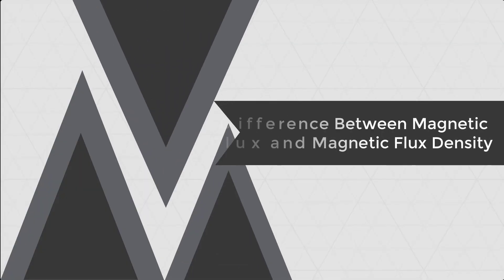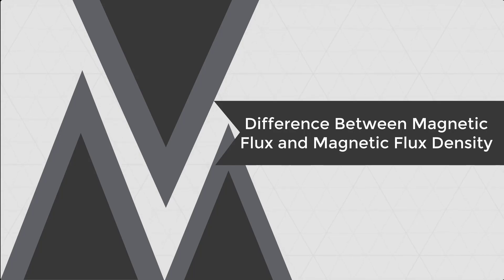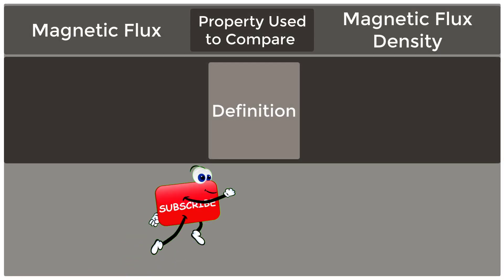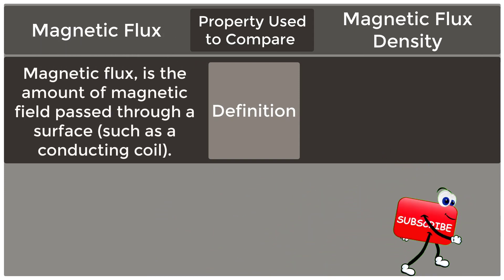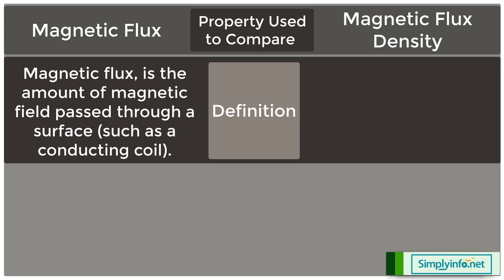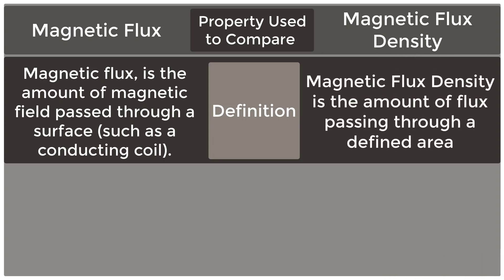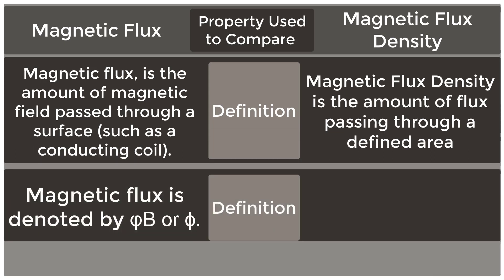The difference between magnetic flux and magnetic flux density. Magnetic flux is the amount of magnetic field passed through a surface, such as a conducting coil. Magnetic flux density is the amount of flux passing through a defined area. Magnetic flux is denoted by Phi B or Phi.